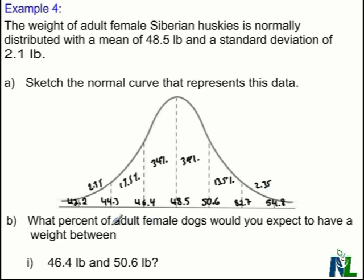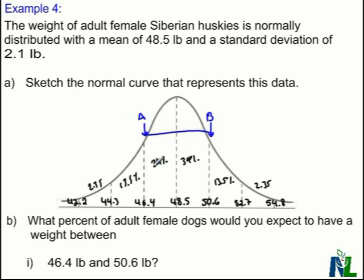The next part of the question asks: what percent of adult female dogs would you expect to have a weight between 46.4 pounds and 50.6 pounds? To calculate that, I need to first locate those values on my sketched normal curve. I can see 46.4 as my starting point, and 50.6 up here. The percentage of data between those two points comes from adding the corresponding section values: 34% plus 34%, giving a total of 68%.